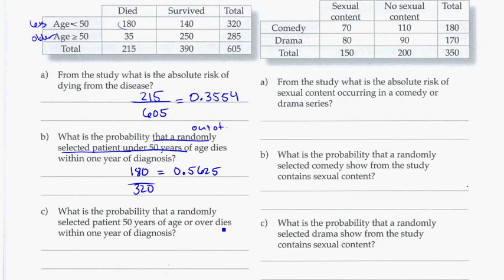Part C, what is the probability that a randomly selected patient 50 years of age or over dies within one year of the disease? So this is the randomly selected patient of that age group. So out of the 285 that were selected, we see that 35 of them died from the disease. So that's 0.1228.